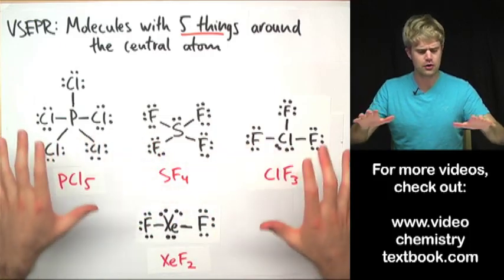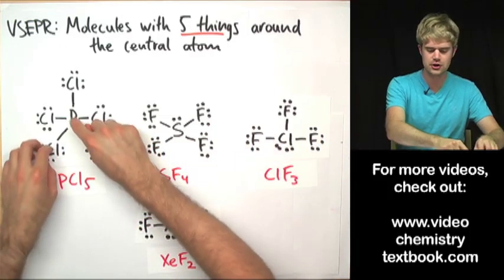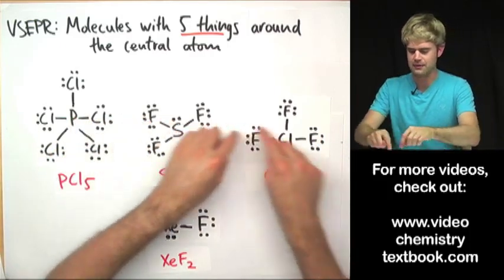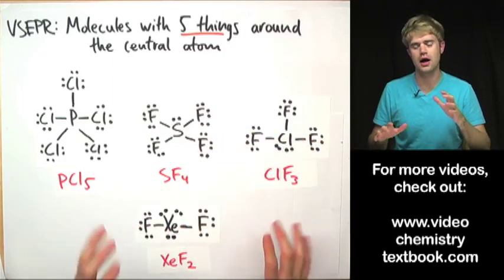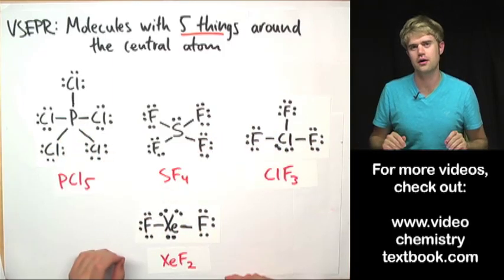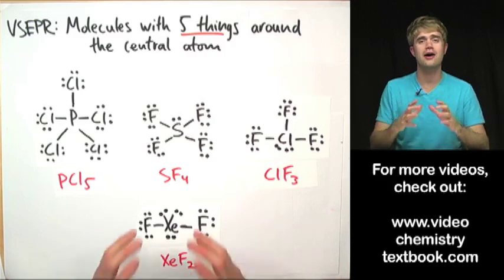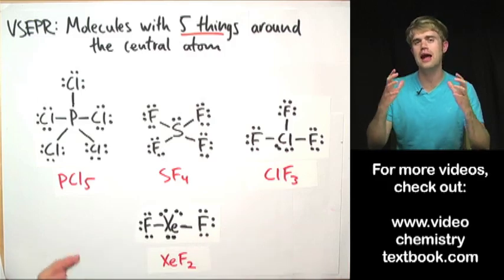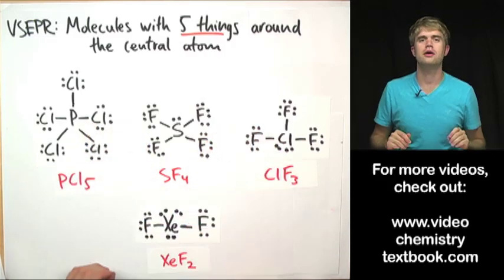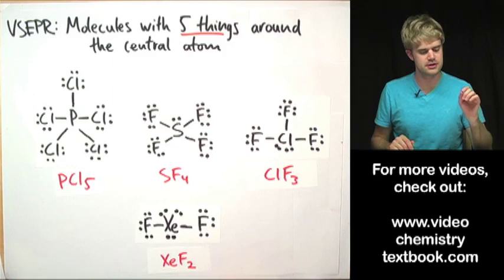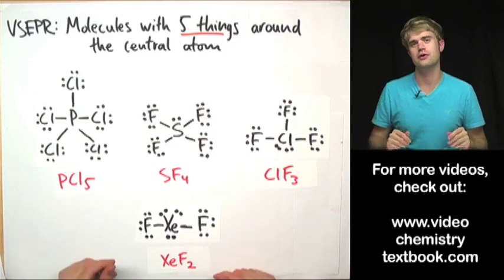You might notice that in all of these molecules, the central atoms are acting as exceptions to the octet rule, which means that these central atoms are happy to have more than eight valence electrons. In fact, for each of these molecules, the central atom has ten valence electrons.